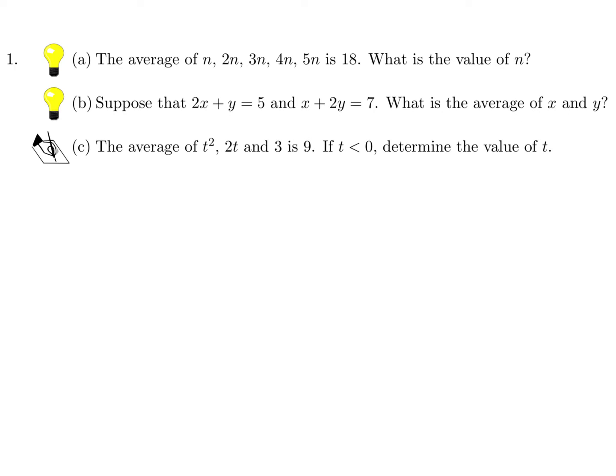The average of n, 2n, 3n, 4n, and 5n is 18. What is the value of n? Add them all and divide by how many there are, which is five numbers, and that equals 18. So the top is 3, 6, 10, 15n. When you cross multiply the 5 with the 18, you get 90, and then divide through by 15 to get 6.